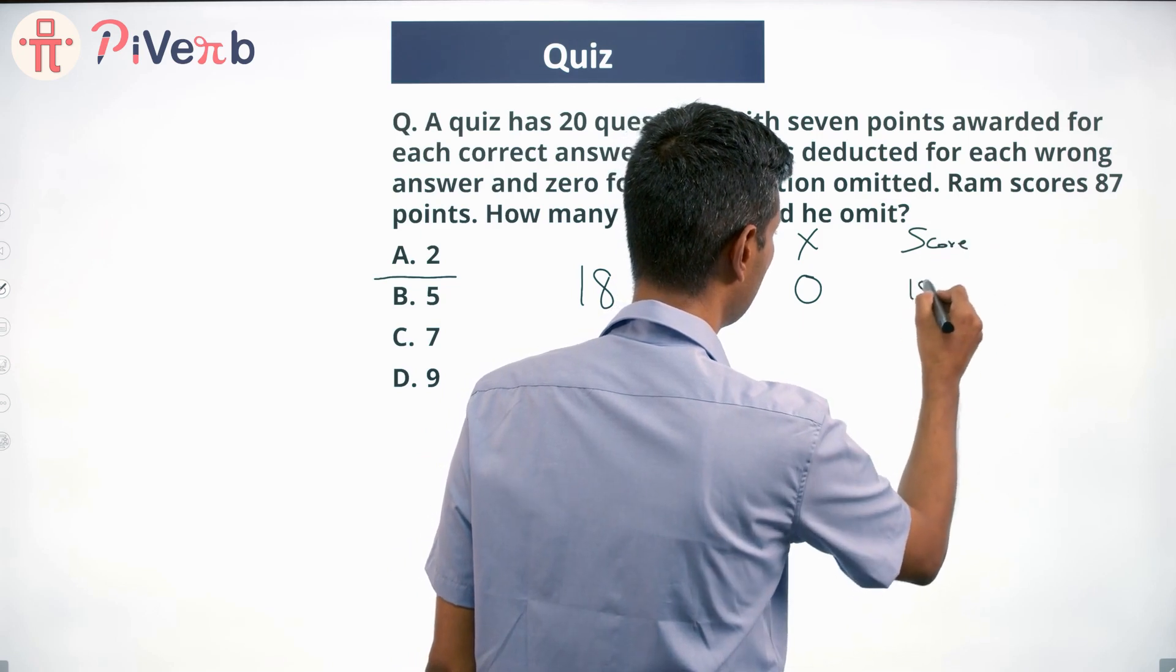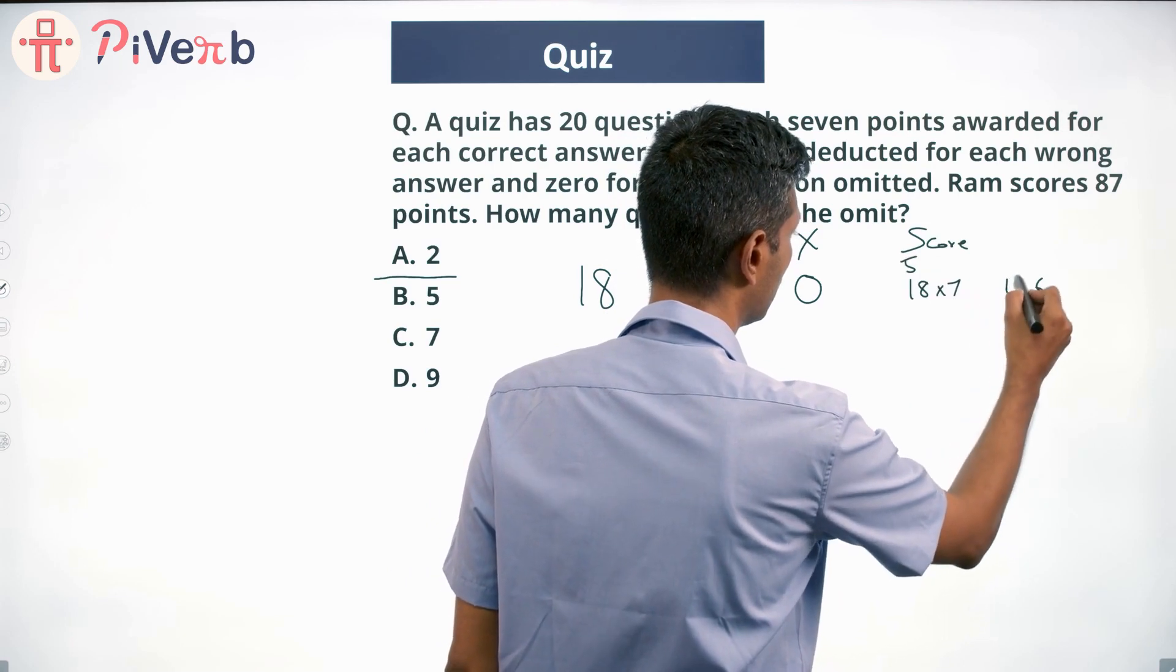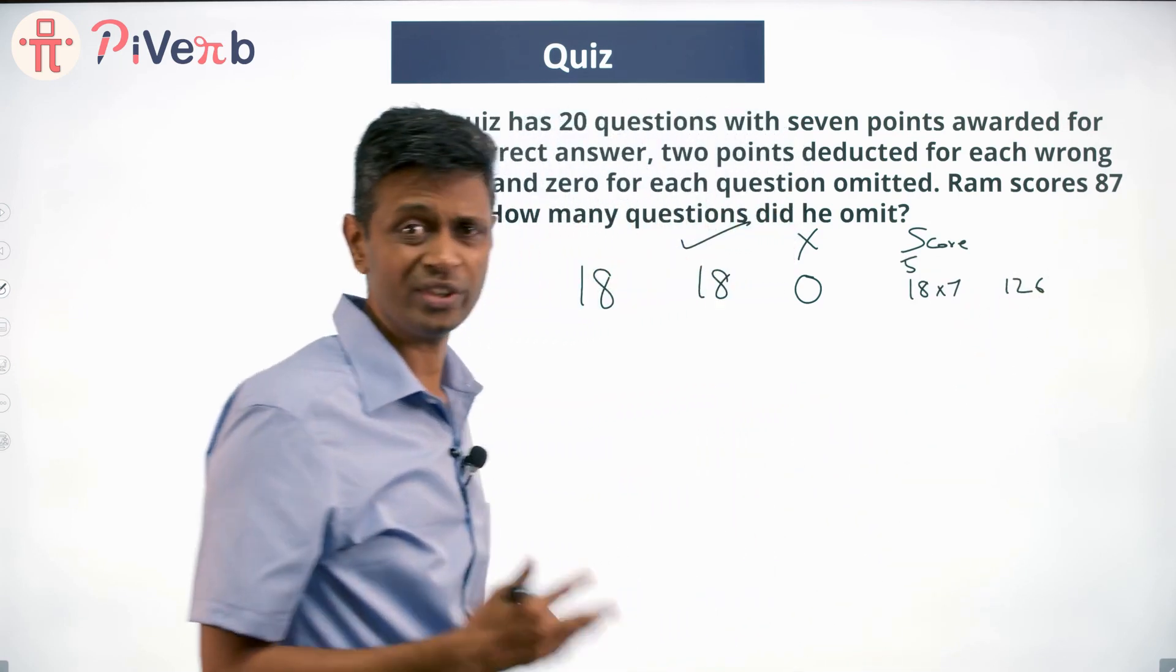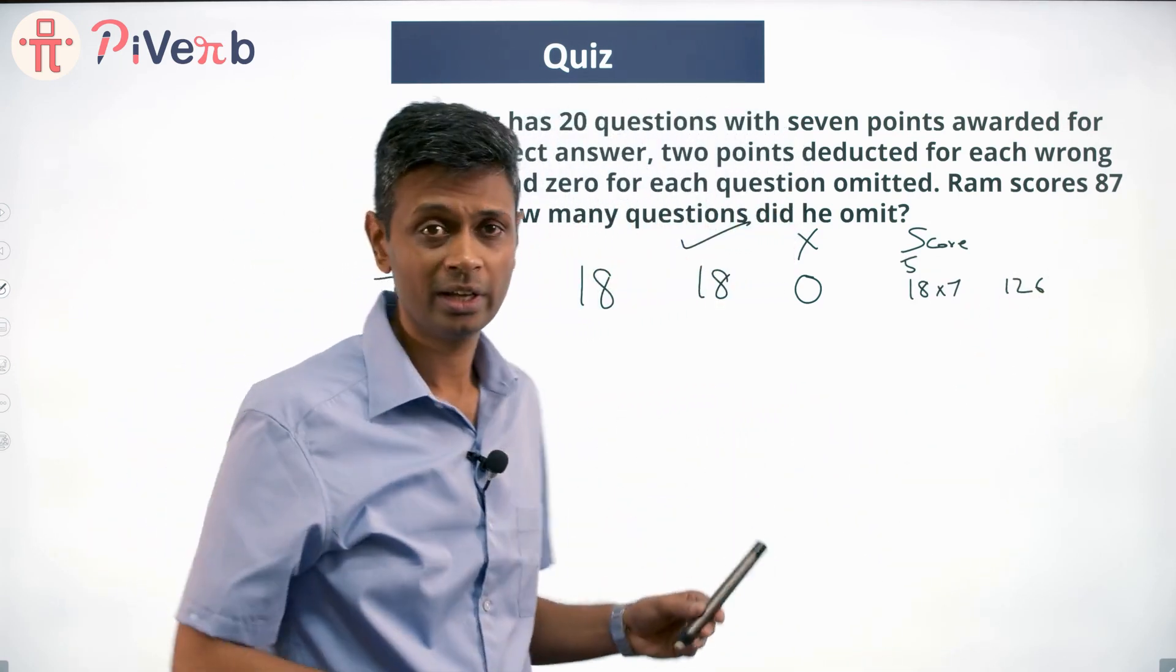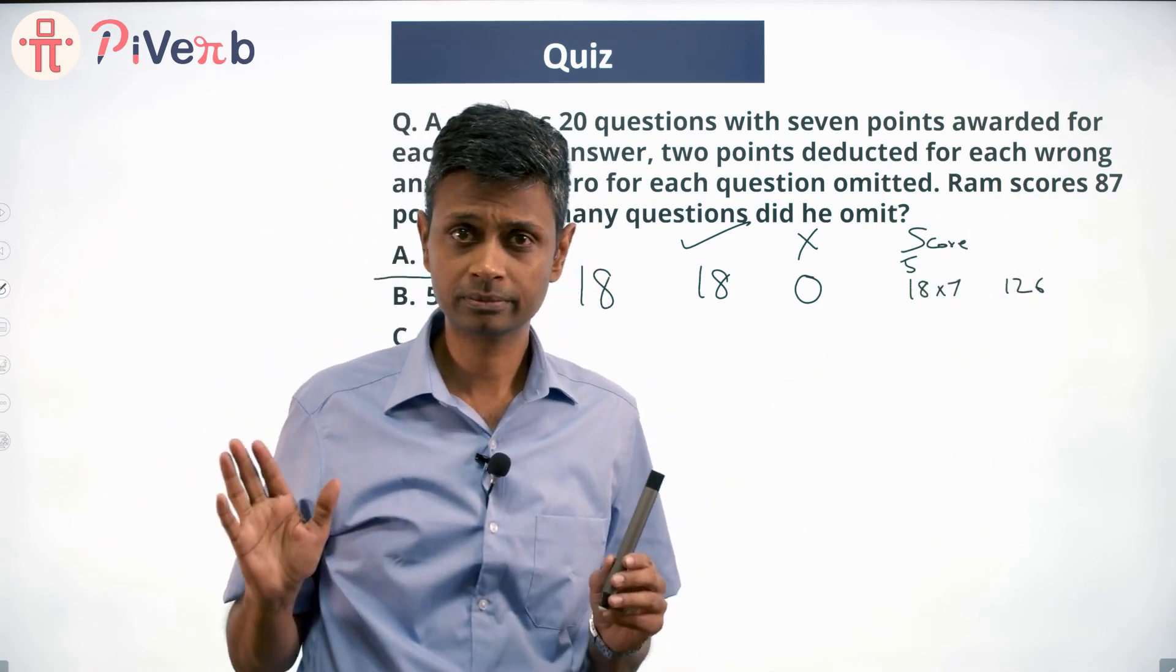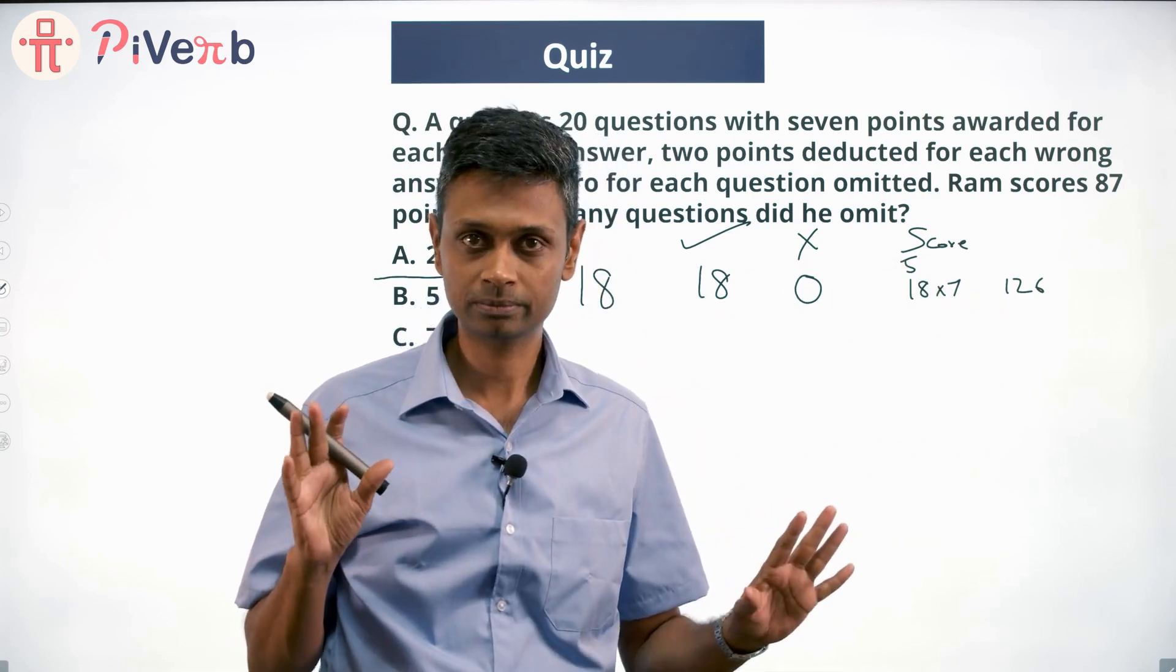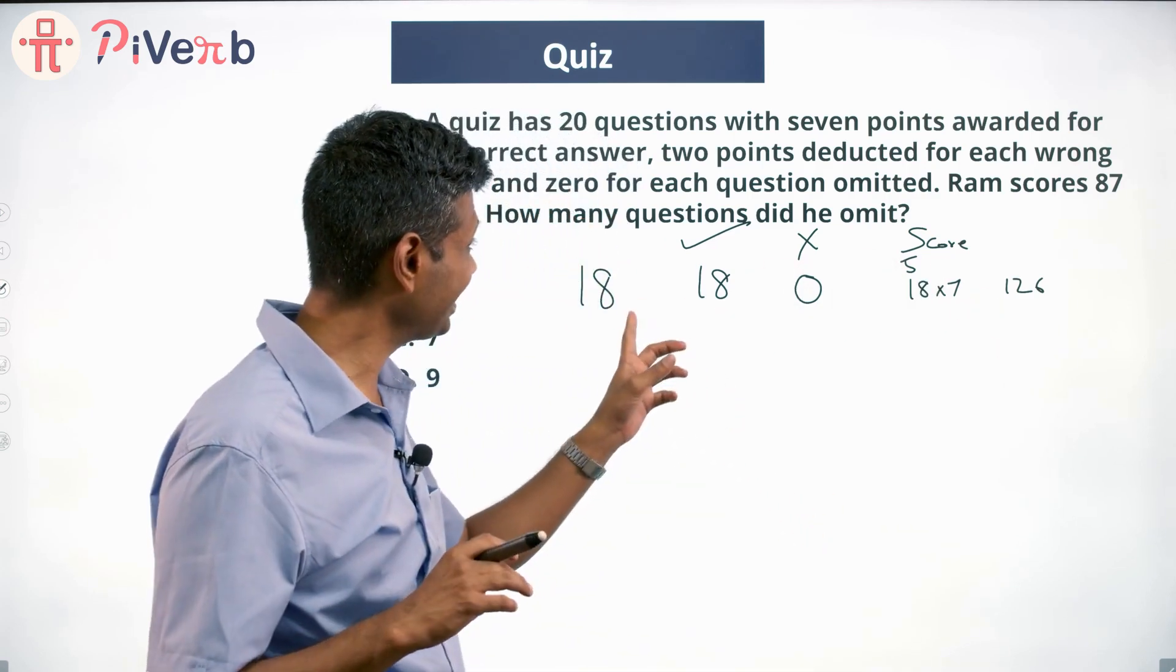His score will be 18 into 7: 7, 8, 56, 126. Obviously this is not the solution. He did not score 126 marks, he scored only 87 marks. So 126 does not work. 18 right and zero wrong, that doesn't work.